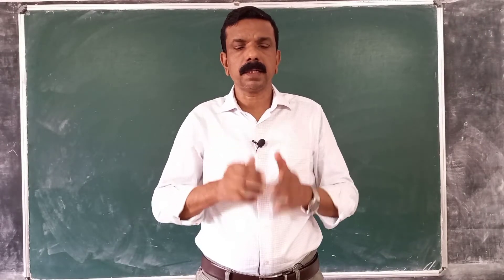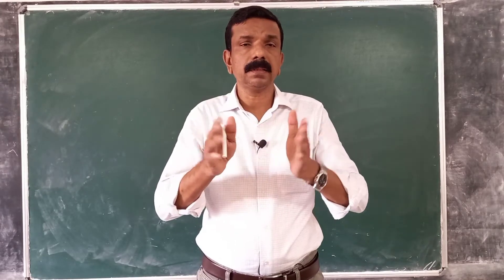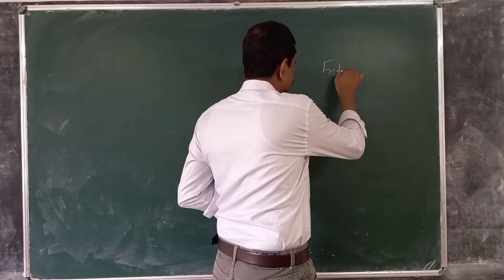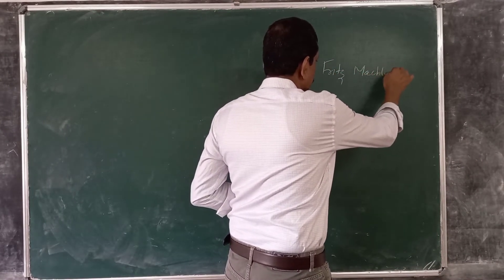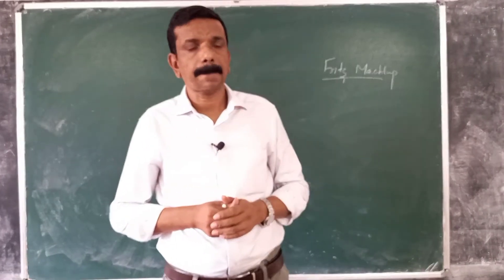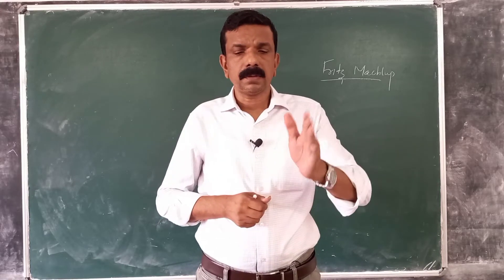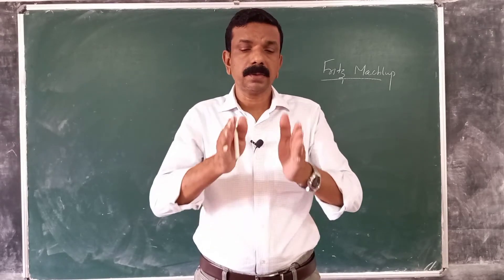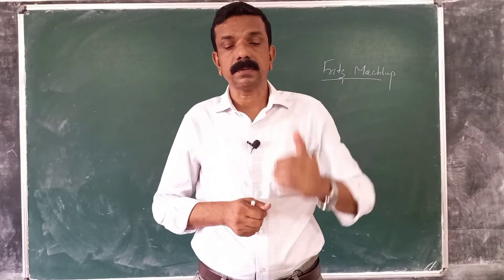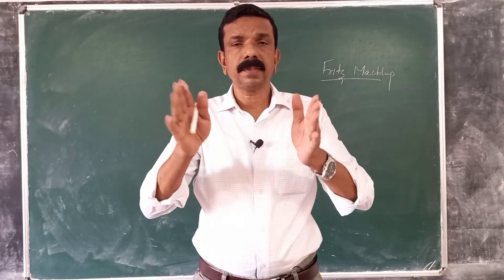Dear students, in this class we will discuss the difference between equilibrium and disequilibrium. Fritz McClubb defined equilibrium as a constellation of selected interrelated variables so adjusted to one another that no inherent tendency to change prevails in the model which they constitute. So it is a state of balance between opposing forces.